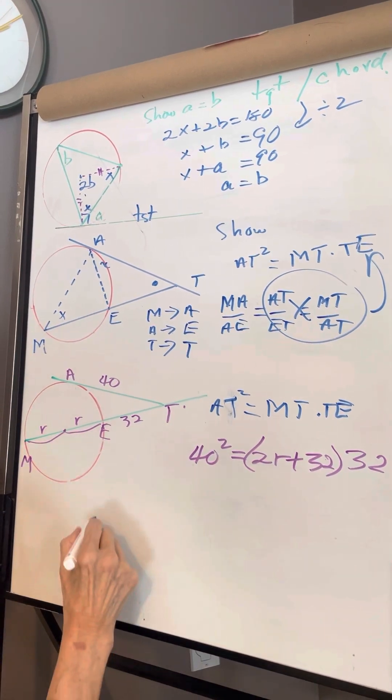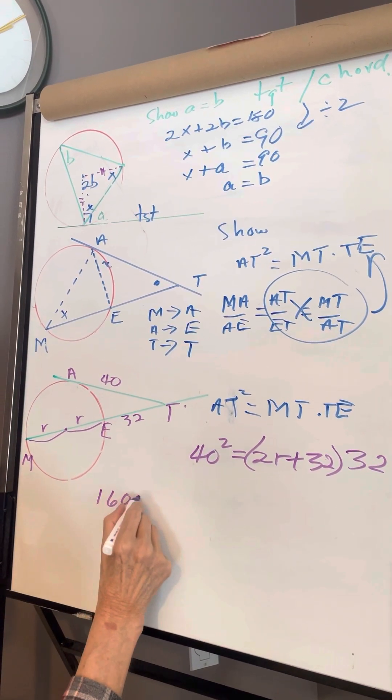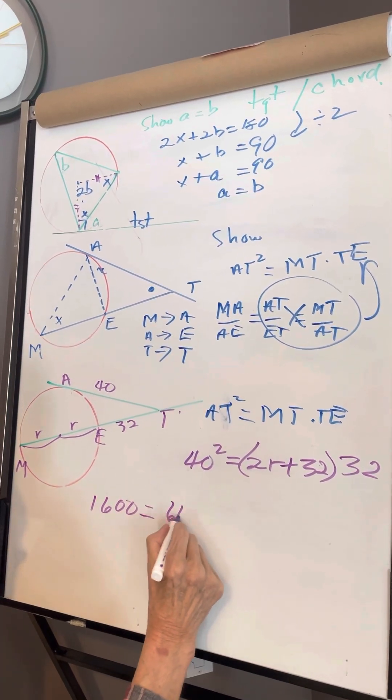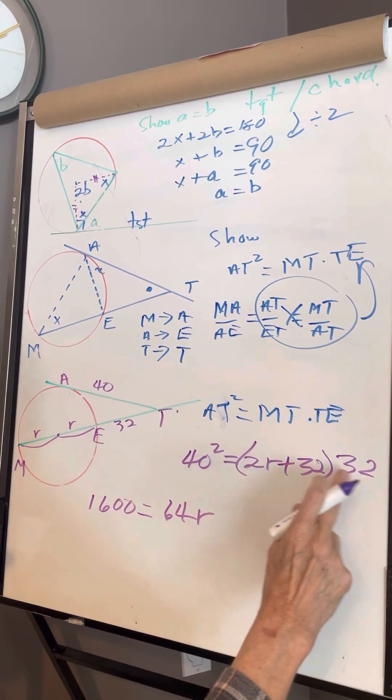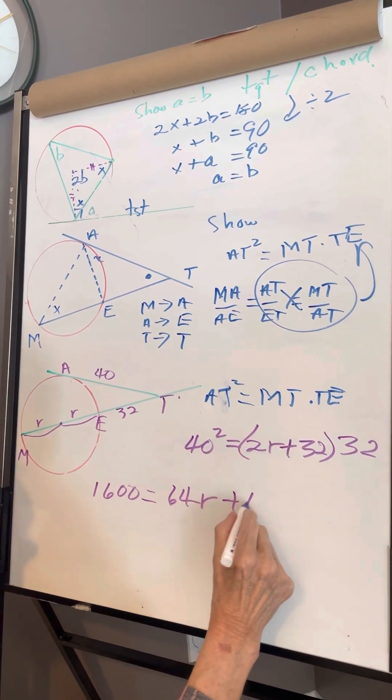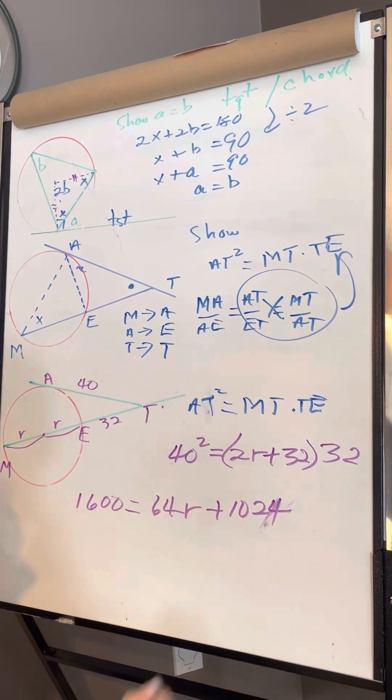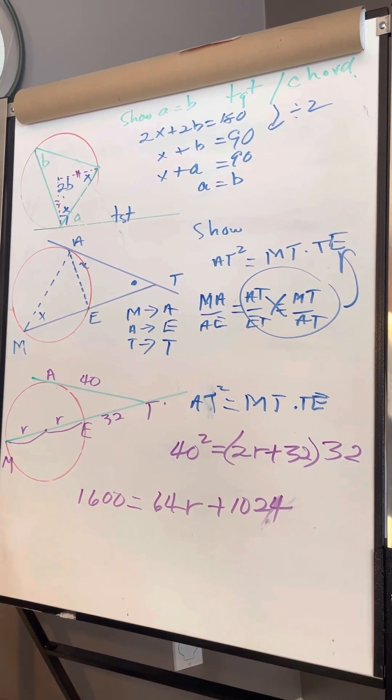So now, 40 × 40 = 1600. 32 × 2r = 64r, and 32 × 32 = 1024. I always know that because when I teach grade 8, I always remember 32 squared.